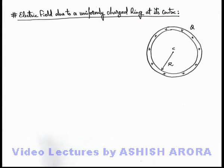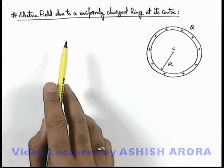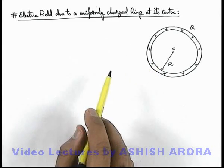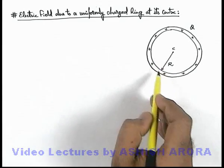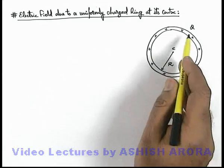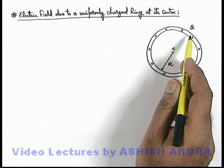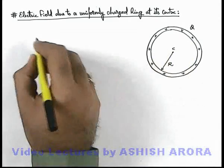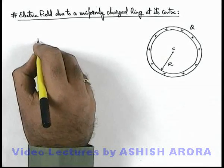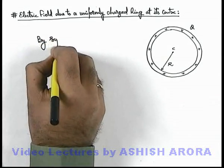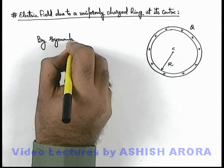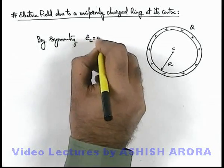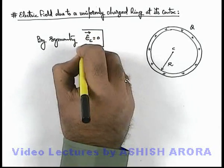Let us calculate the electric field strength due to a uniformly charged ring at its center. If the ring is uniformly charged with a charge q and we wish to calculate the electric field at the center, we can simply say by symmetry that the electric field at the center will be equal to zero.